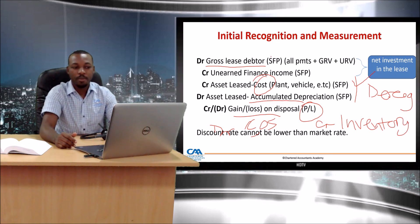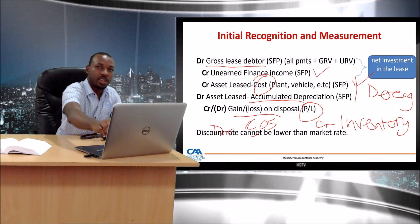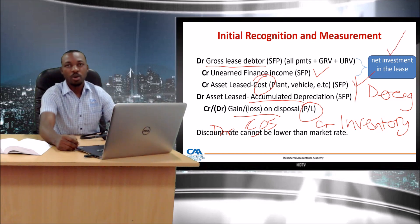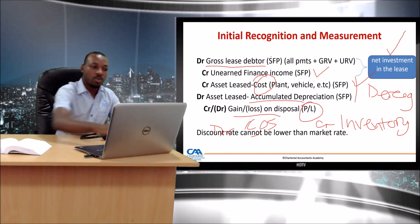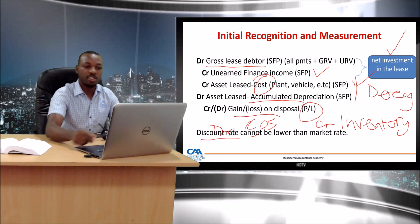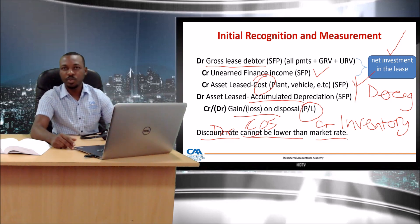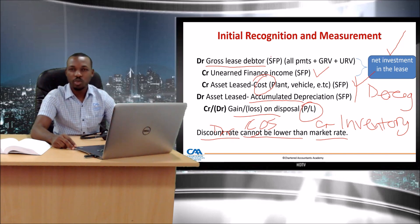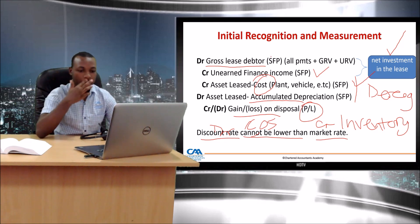For these types of transactions, you need to calculate the net investment in the lease as the present value of all amounts expected to be paid. To get that present value you need a discount rate, and that discount rate cannot be lower than the market rate. Sometimes a transaction may offer a 1% interest rate, but there's no such thing in the market — you must use the market interest rate to discount.